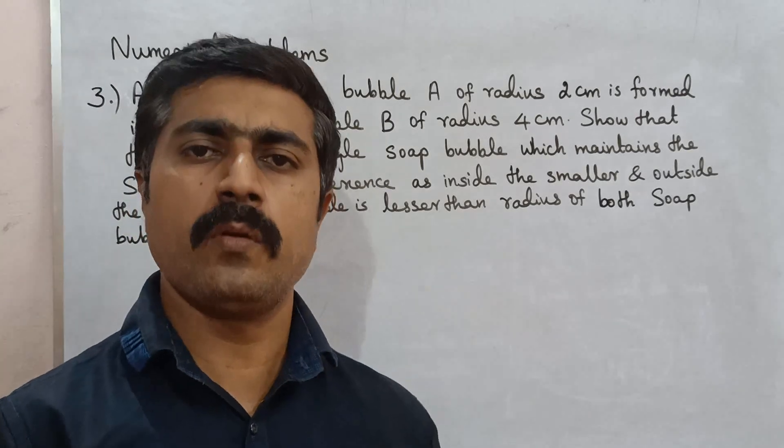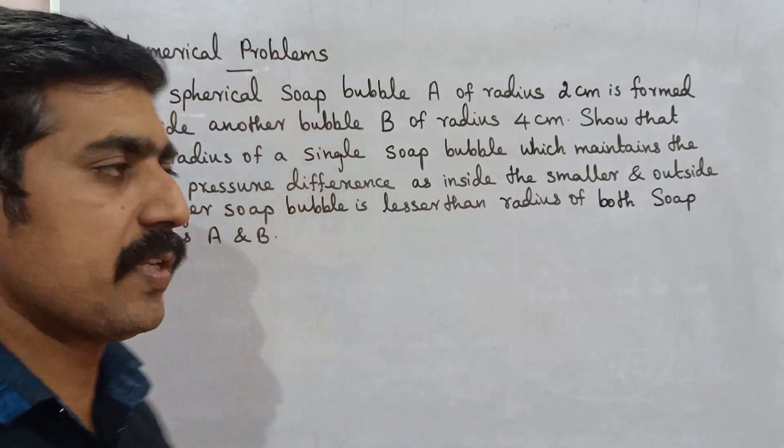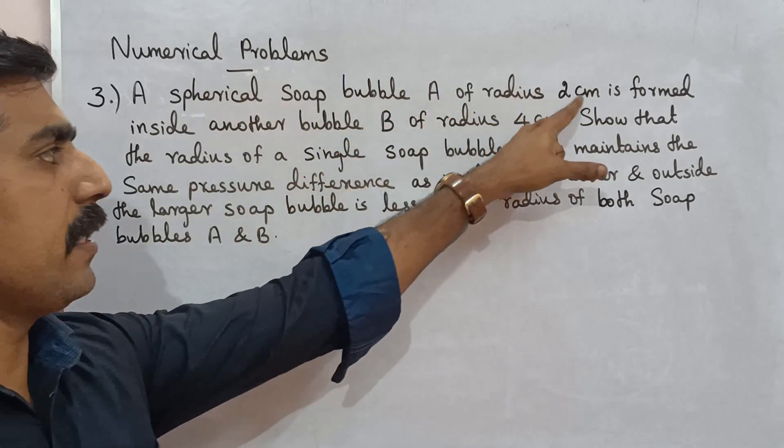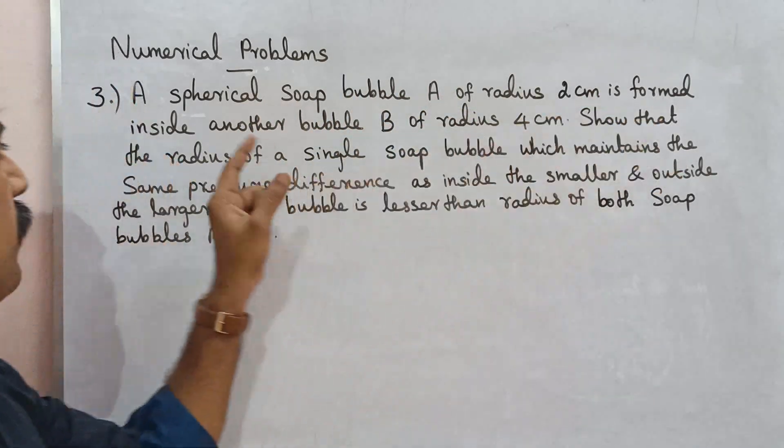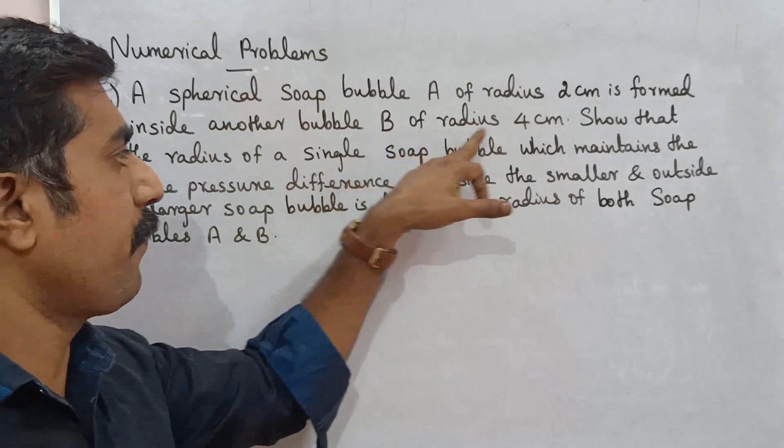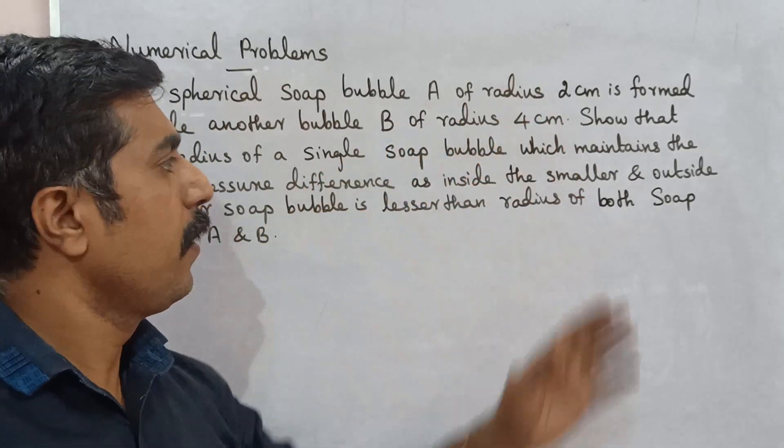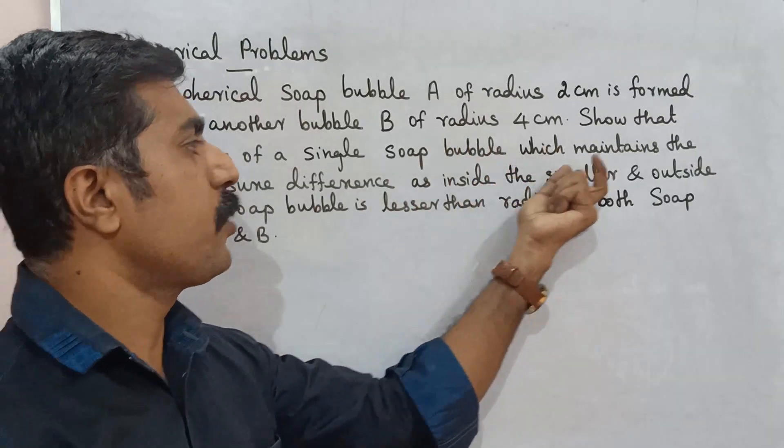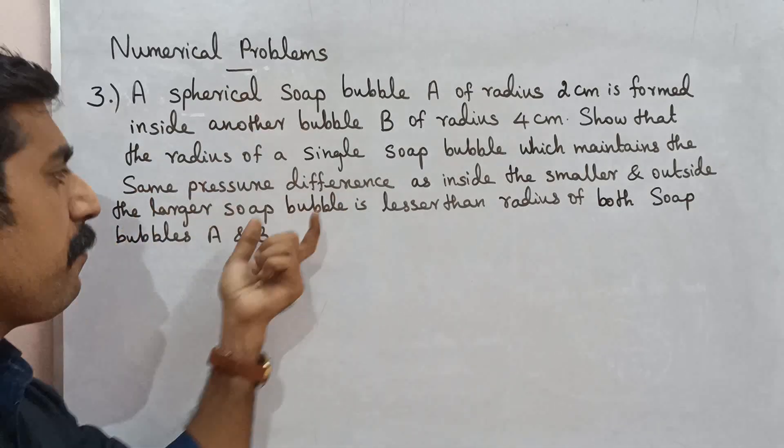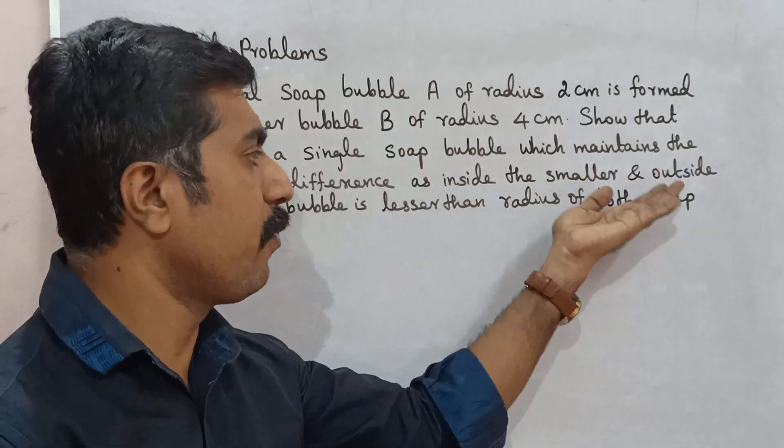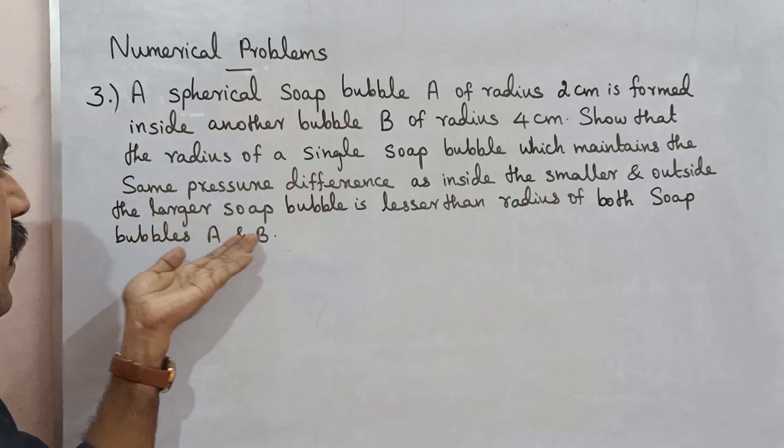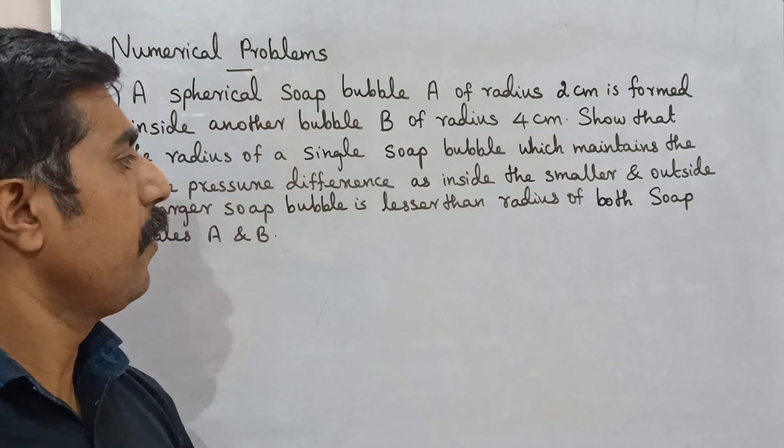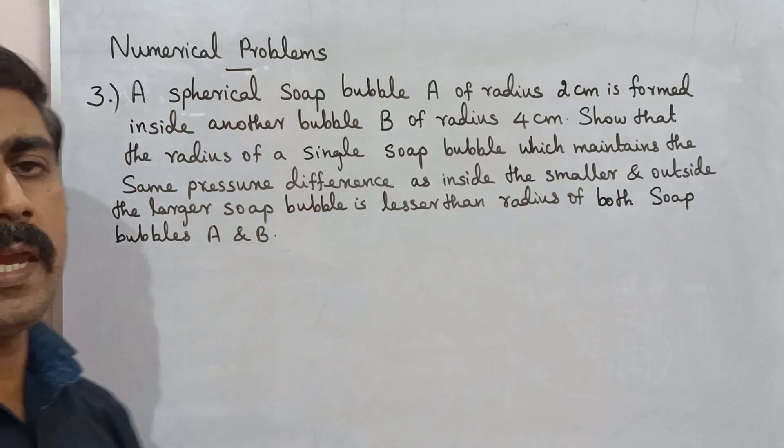But the solution is very simple. A spherical soap bubble A of radius 2 cm is formed inside another bubble B of radius 4 cm. Show that the radius of a single soap bubble which maintains the same pressure difference as inside the smaller and outside the larger soap bubble is lesser than the radius of both soap bubbles A and B.